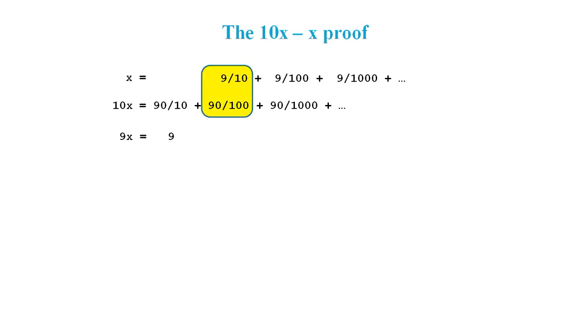Now we've reached the start of the terms that we've lined up on purpose, because they have the same value. As we said before, 90 over 100 equals 9 tenths. So when we subtract one from the other, we get 0.